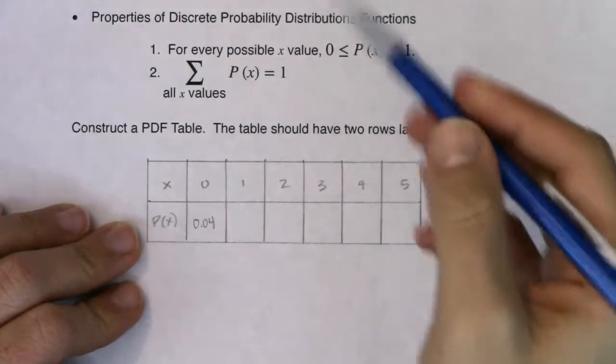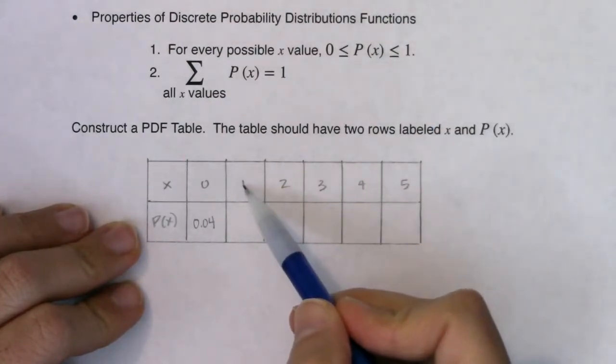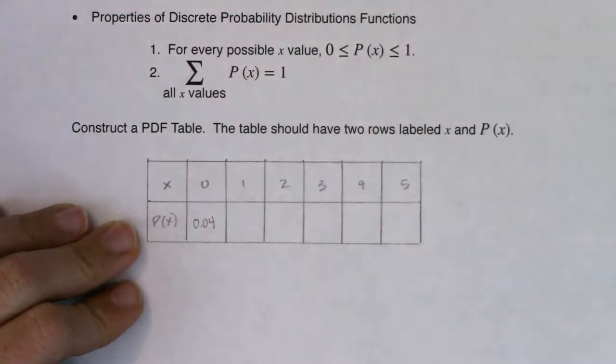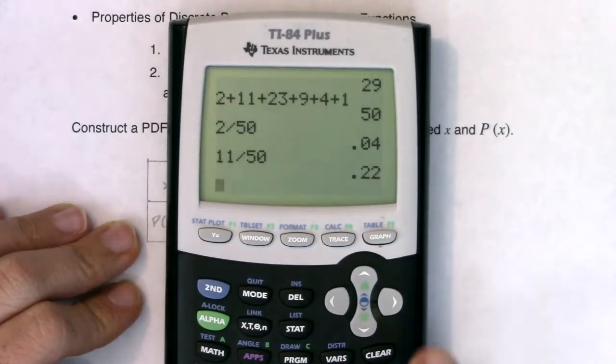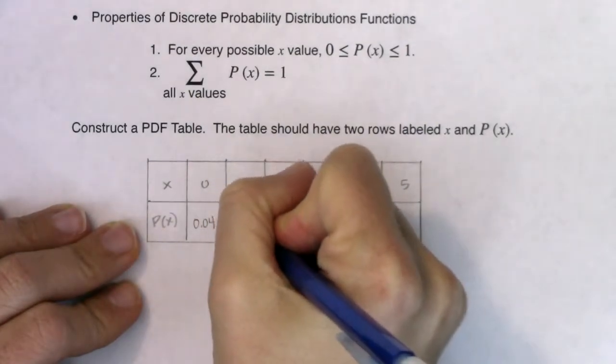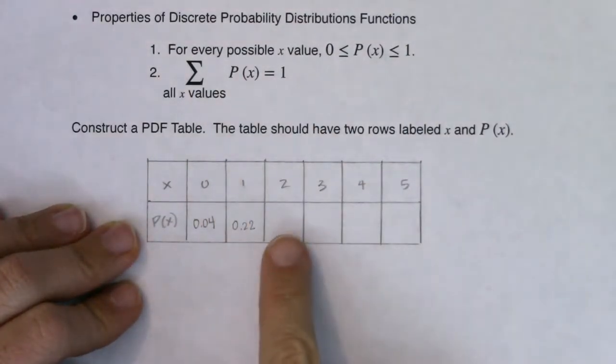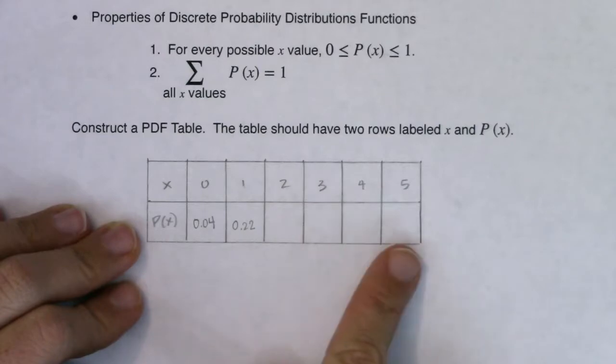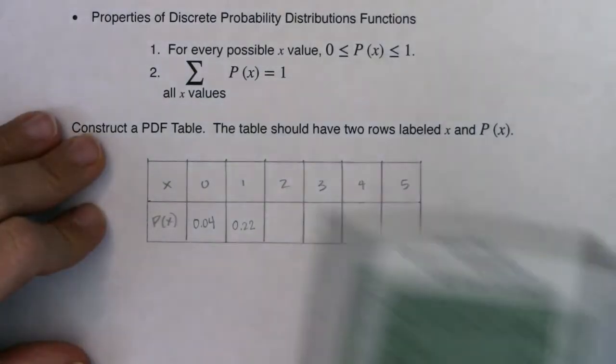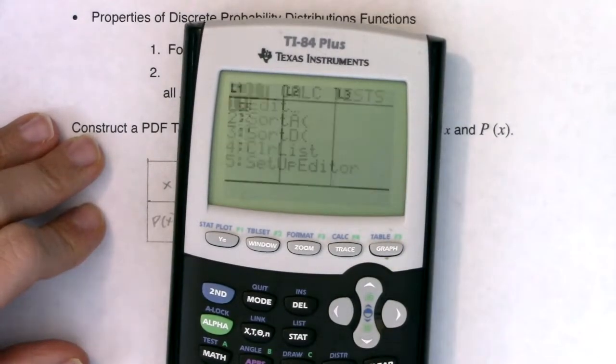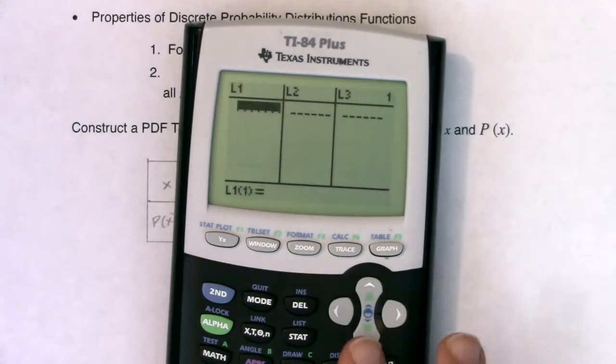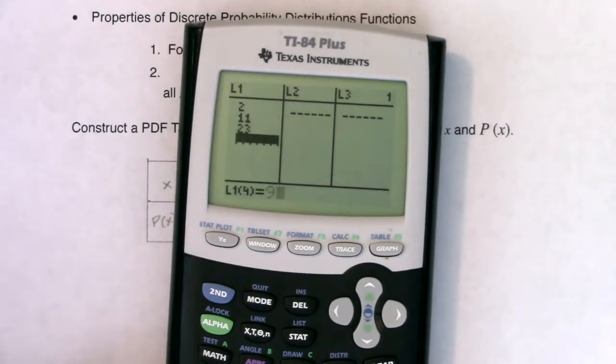This first probability is 0.04. There were 11 mothers that were woken up exactly one time, so I want to take that, go 11 divided by 50, and I will find out that probability is 22%. I'm going to repeat this for the numbers associated with moms getting woken up twice, three, four, and five times. I'm going to go into my lists, clear out whatever was in there, and write my frequencies: 2, 11, 23, 9, 4, and 1.